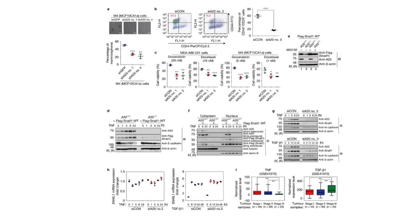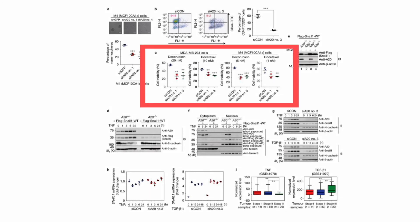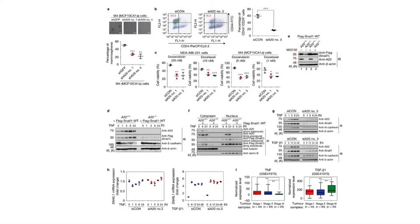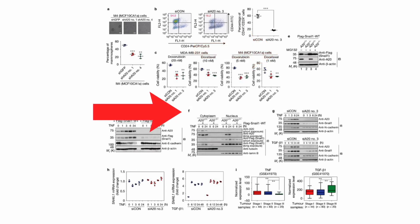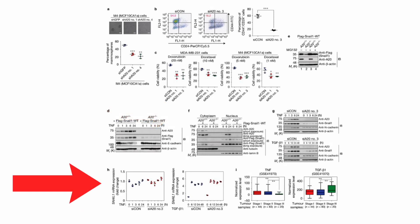In figure eight, the researchers validated their findings using actual human patient tissues and datasets. Knockout of A20 significantly decreased cell viability in combination with doxorubicin and docetaxel — both commonly used breast cancer treatments — in triple negative breast cancer cells and highly metastatic breast cells. They again confirmed that A20 regulates SNAIL1 only at the protein level, within the nucleus, and not at the mRNA level.